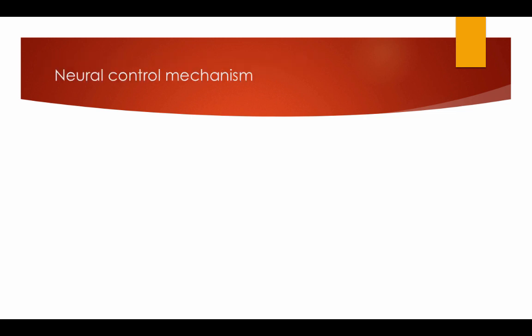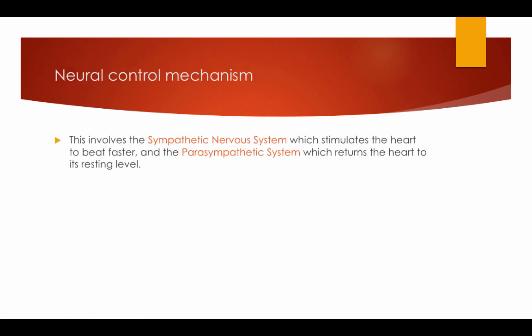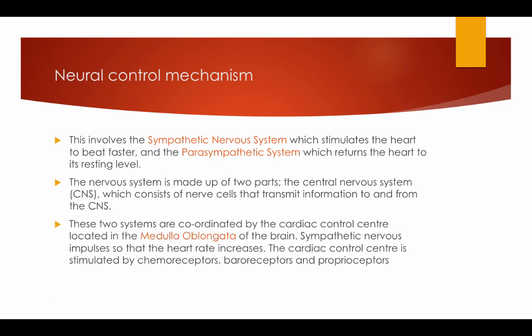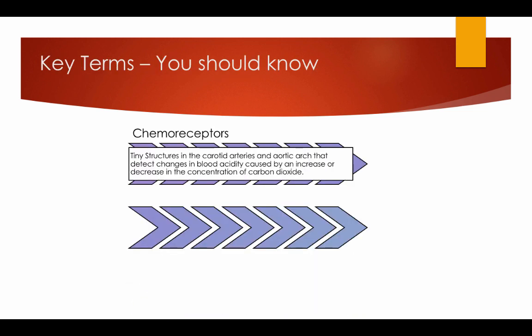The neural control mechanism: so that the heart rate increases, the cardiac control centre is stimulated by chemoreceptors, baroreceptors, and proprioceptors. Chemoreceptors: tiny structures in the carotid arteries and aortic arch that detect changes in blood acidity caused by the increase or decrease in the concentration of carbon dioxide.